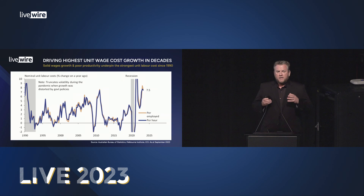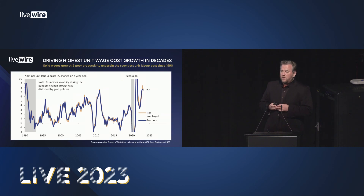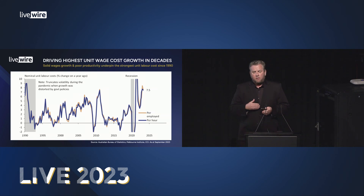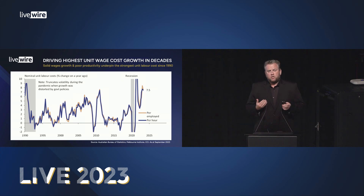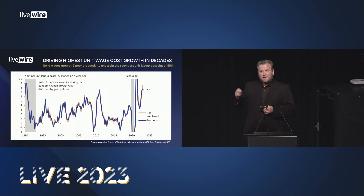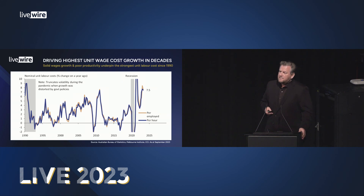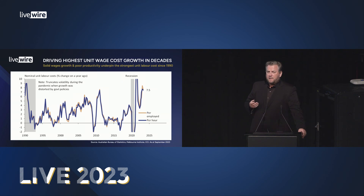Unit wage costs are what central banks use to forecast inflation — the key forecast variable in their models. Here in Australia they're running at about 7.5%, the highest level in decades, and we're seeing similar dynamics all over the world in the US, Europe and New Zealand. Unit wage costs are nominal wages less productivity, and for the RBA to hit its 2-3% inflation target, these unit wage costs need to be down around 2.5%, not 7.5%, and there's no sign of any change.